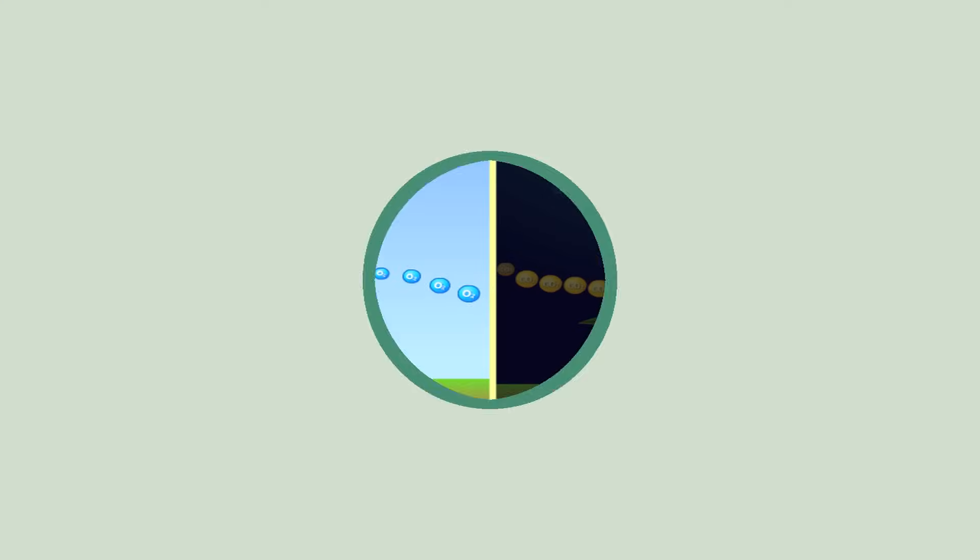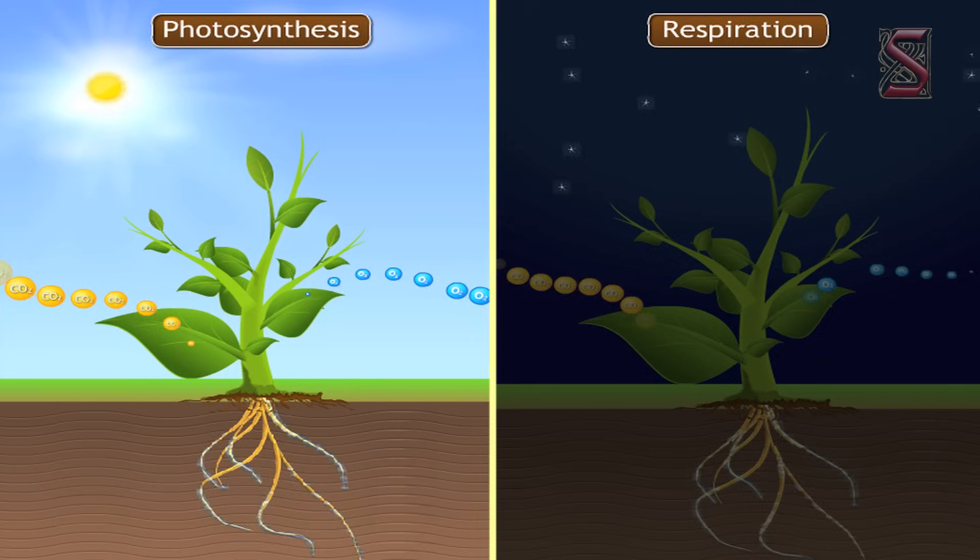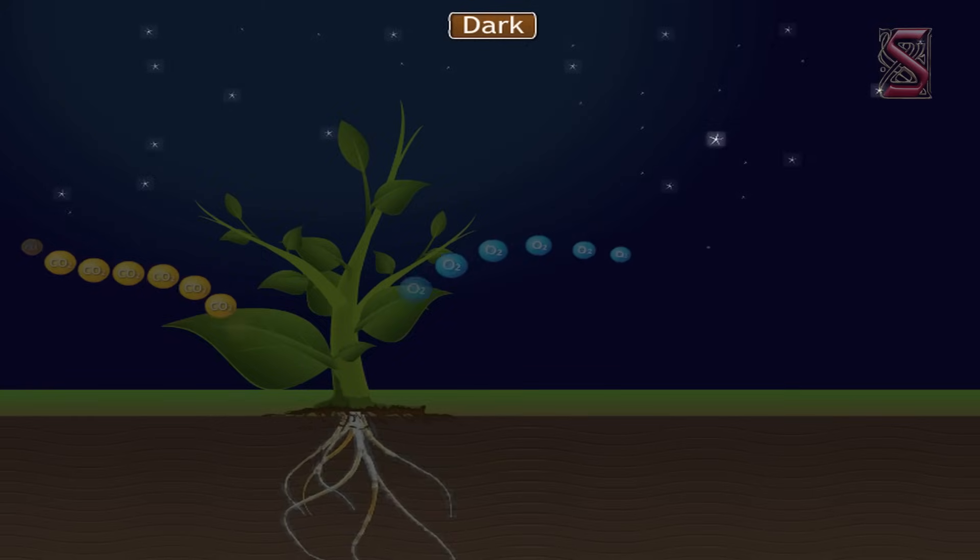Children, the presence of light also affects the plant physiology. Let us learn about it and the effect of light on the processes of photosynthesis and respiration in plants.